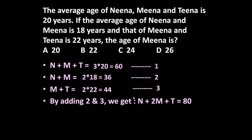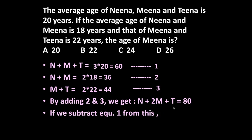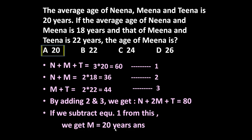So if we subtract equation number 1 from this, we will get M is equal to the required answer. Subtracting gives us M is equal to 20 years. So the age of Mina is 20 years.